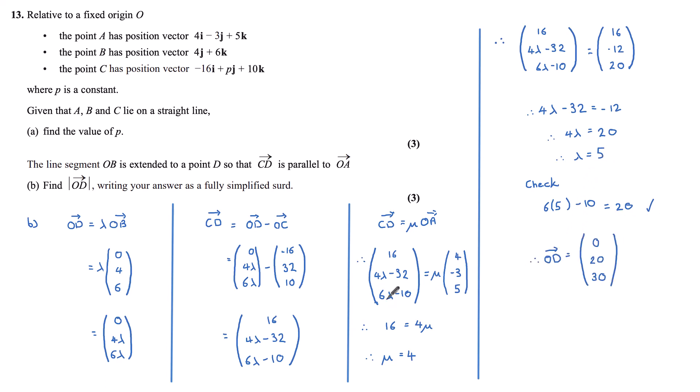Taking this lambda value back to my vector for OD. (0, 4λ, 6λ). This is now 4 times 5 is 20, 6 times 5 is 30. So I have my OD vector written as (0, 20, 30). I need the magnitude of this. The magnitude of OD is equal to the square root of 20 squared plus 30 squared, and that is 10 root 13.